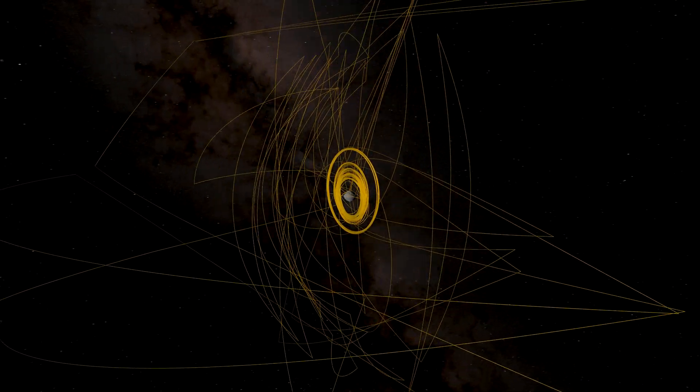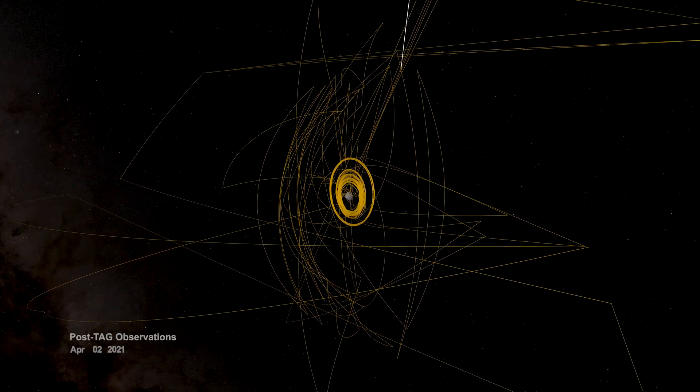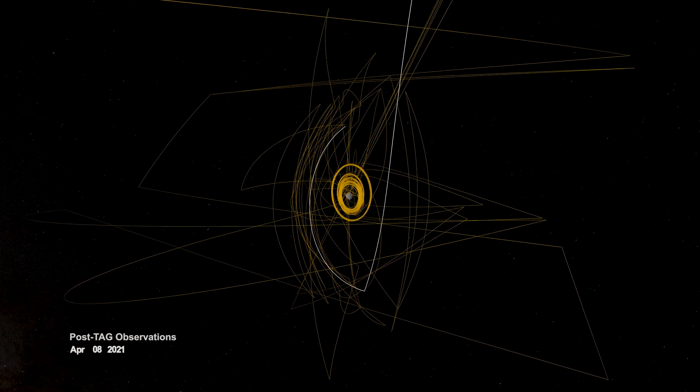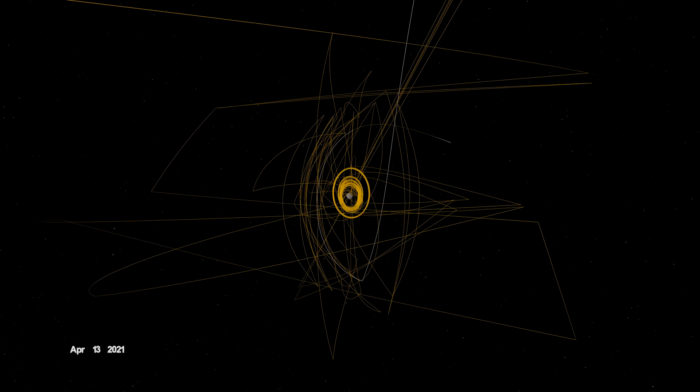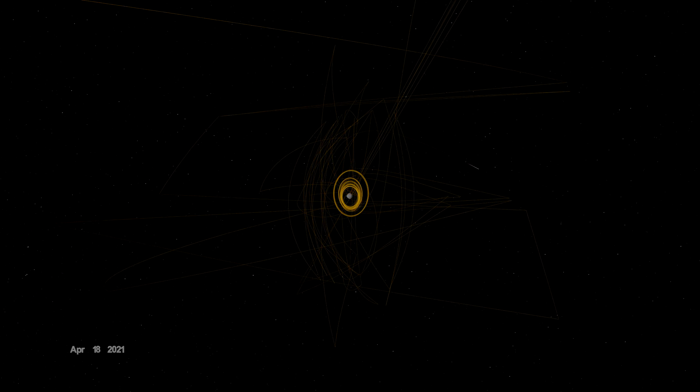They directed it to stow the sample in preparation for return to Earth. Before departing Bennu, OSIRIS-REx was given one final task. On April 7th, it flew over Site Nightingale to observe how the sample collection event had changed the surface. And with that, OSIRIS-REx had recorded its mark on Bennu and spun the last strand of its web.